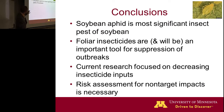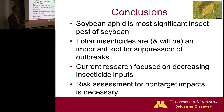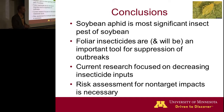In conclusion, soybean aphid is the most significant arthropod pest of soybean. Foliar insecticides are, and for the foreseeable future will continue to be, an important tool for suppression of this pest. Current research at the University of Minnesota and other states in the region is focused on finding ways to decrease the amount of insecticide inputs for management of this pest, and a valid risk assessment of non-target impacts is really needed.